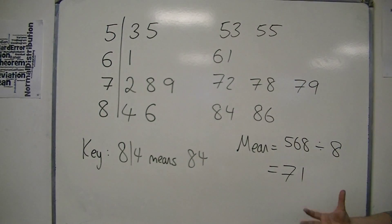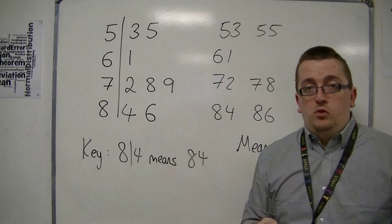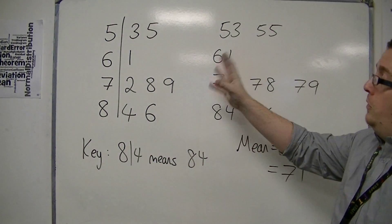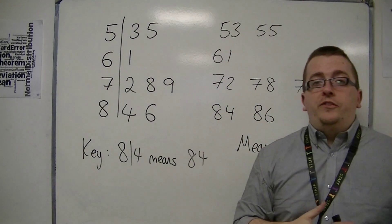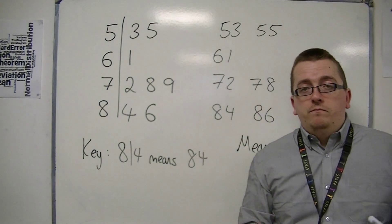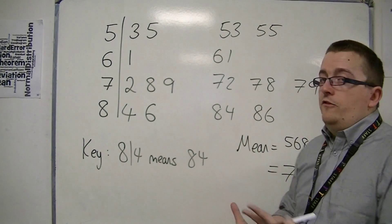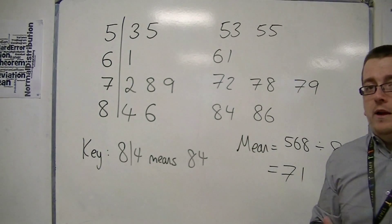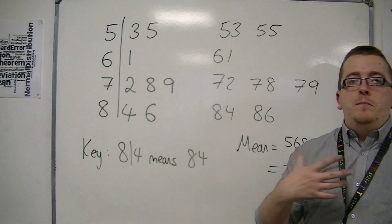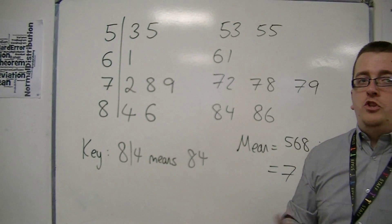If you are going to be asked the mean, the stem and leaf diagram is going to be quite small. It's going to be nice and small like this, only 8 numbers, so that it's quite straightforward to do. If you have something like 20 numbers in a stem and leaf, then finding the mean is just too challenging.